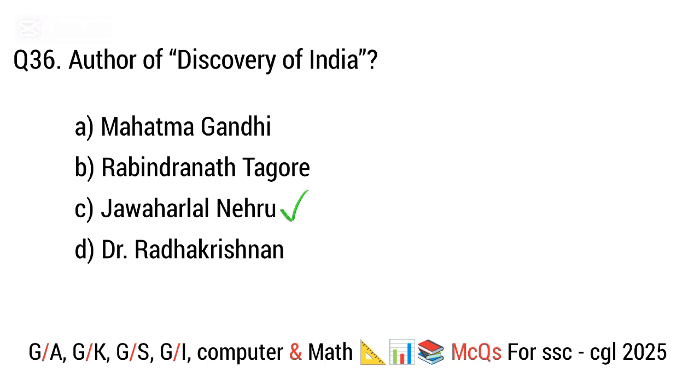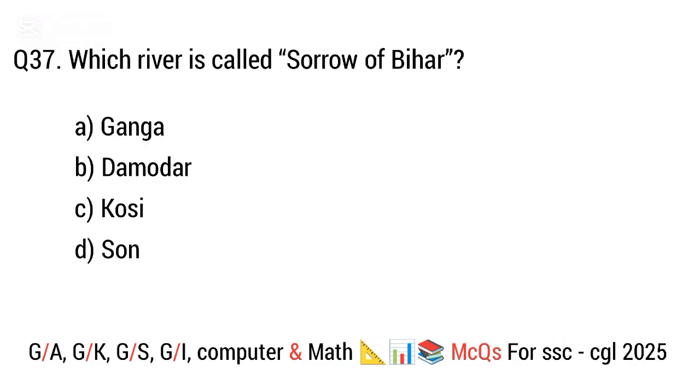Question 37. Which river is called the sorrow of Bihar? The right answer is option — (answer not clearly stated).